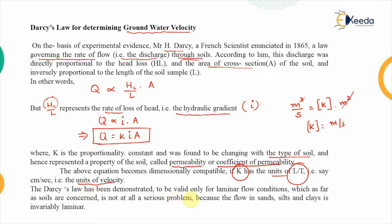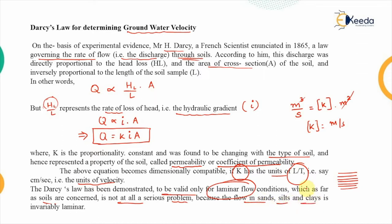Darcy's law is valid only for laminar flow conditions, where adjacent laminas flow one over the other. In the case of soil — sands, silts, or clay — the flow is invariably laminar, so this is not a serious problem and we do not need to artificially enforce laminar conditions.